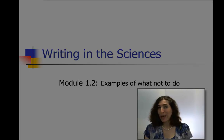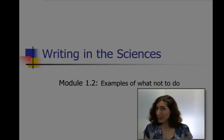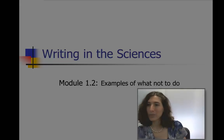In this second module, I'm going to give you some examples and we're going to go through them. They're really just representative of what's out there in the scientific literature — and also kind of examples of what not to do.